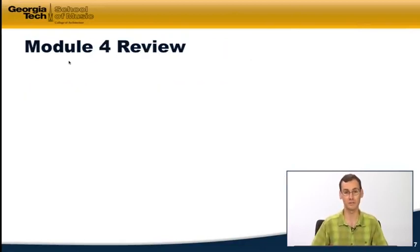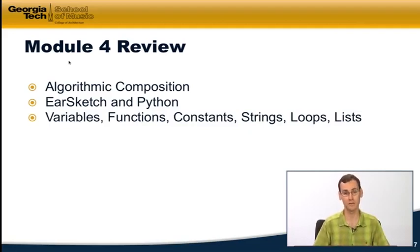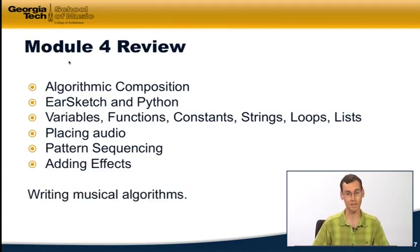At this point, I want to recap all the things that we've done in module four. As we've introduced Python and the EarSketch API, we've looked at the concepts of algorithmic composition, specifically in terms of EarSketch and Python. We've covered some basic concepts in Python, looking at variables, functions, constants, strings, loops, and lists. And we've covered basic ideas in the EarSketch API: functions to place audio on our multitrack timeline, to do pattern sequencing by defining our own rhythms with beat strings, and adding effects, controlling effects parameters and envelopes to change those effects parameters over time. In module five of the course, we're going to take everything that we've learned here and go a step further, really looking at the notion of not just writing sequential instructions for a computer to follow, but writing musical algorithms that take fundamentally different approaches through code of how we make music.